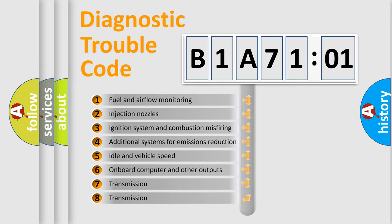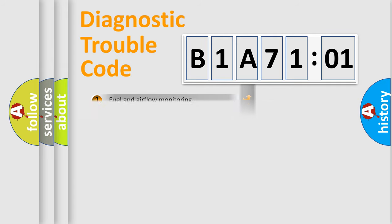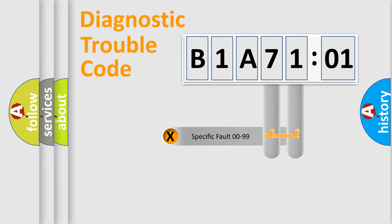The third character specifies a subset of errors. The distribution shown is valid only for the standardized DTC code. Only the last two characters define the specific fault of the group.